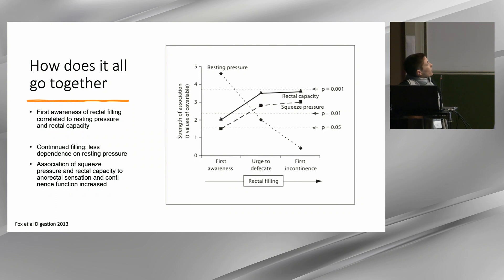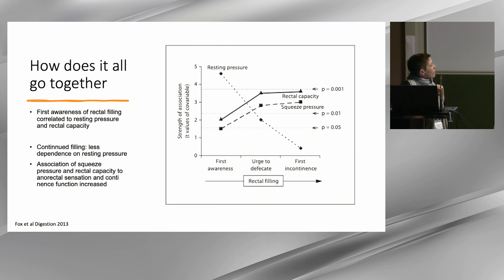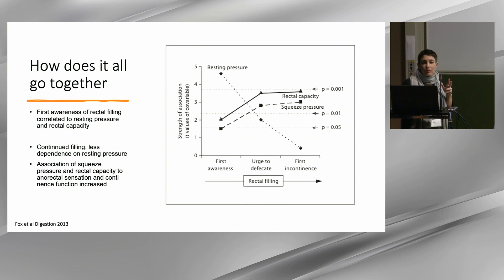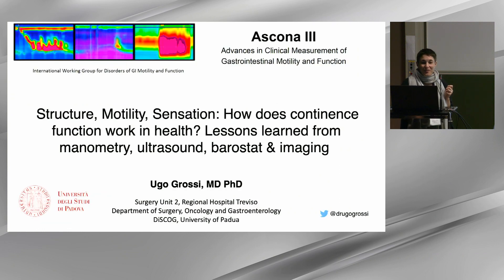How does it all work together? This is also something that Mark explored. Looking at the curve of strength of association and rectal filling, the first awareness of rectal filling correlated to resting pressure and rectal capacity. That changed as you were filling more — there was less dependency on resting pressure. The association with squeeze pressure strength, rectal capacity, and anorectal sensation all had an impact on continence function. So sphincter pressure, rectal capacity, and sensation all work together in keeping us able to retain about one liter of Stocky. With this, I hand over to Ugo, who will talk about imaging and ultrasound.